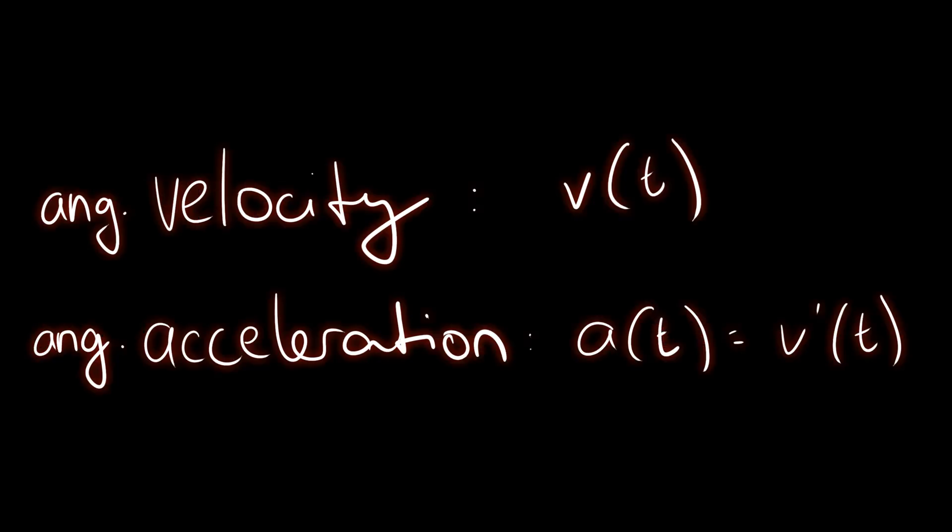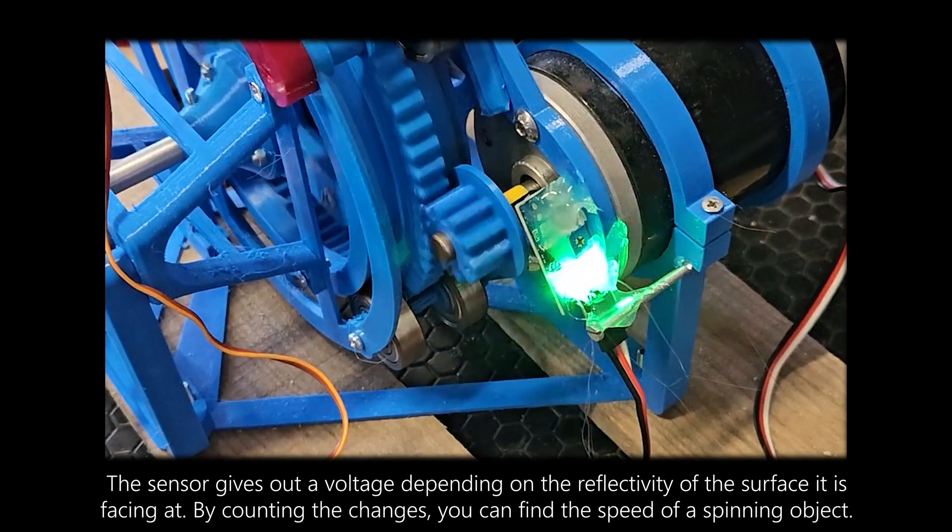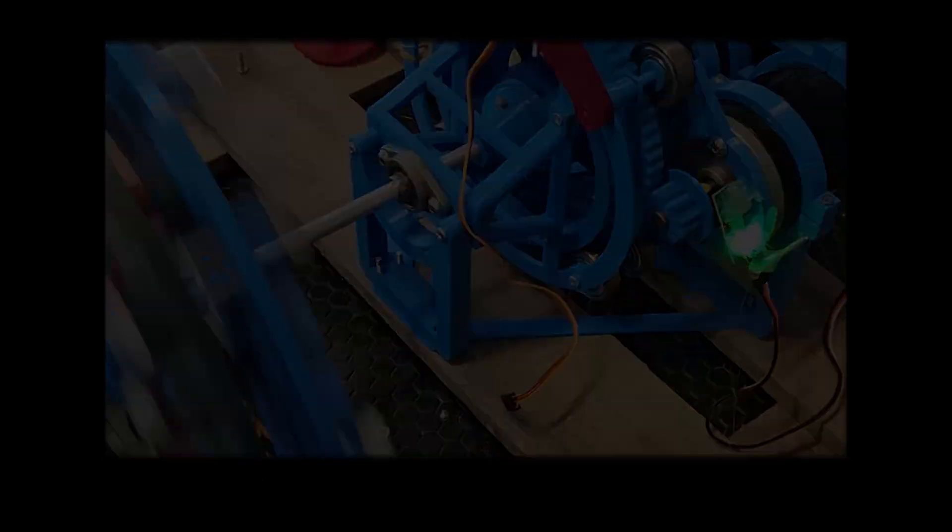Now we come to the electronics of this whole thing. To measure the acceleration of the flywheel, I needed to measure the speed of the flywheel first. At first, I decided to use an IR sensor to measure the speed of the output shaft, which worked, but since the module didn't work really well at higher speeds, I needed to reduce the accuracy of the system.